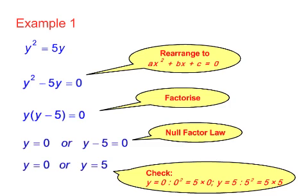Notice when you get your answers, it's a good idea to check that when substituting y equals 0 and y equals 5 back into the original, y² equals 5y, that you get the left-hand side equal to the right-hand side. Do this for yourself.